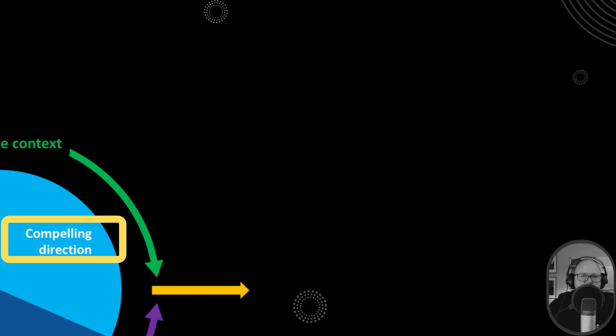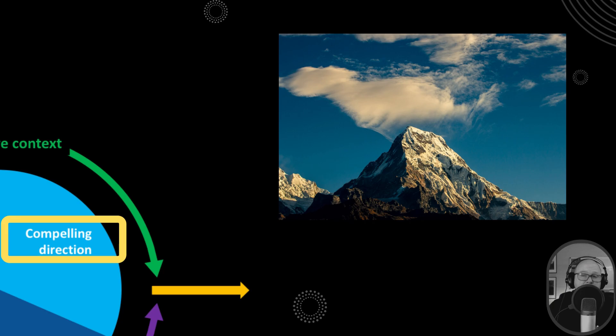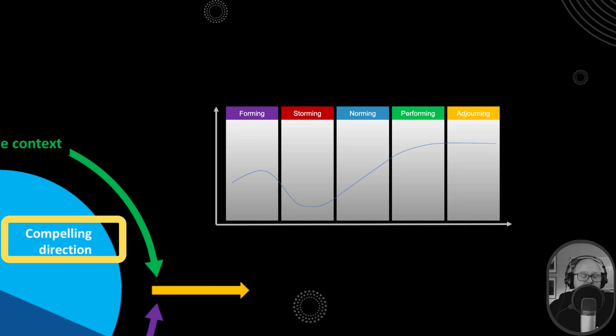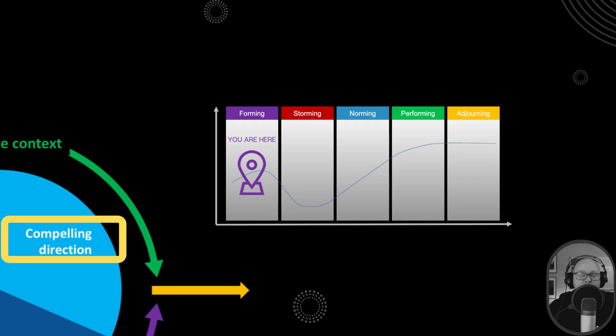Second, teams need a compelling direction. Members need to know and agree on what they're supposed to be doing together. Unless a leader clearly articulates a direction, there's a real risk that different members will pursue different agendas. This is increasingly important in the forming stage of Tuckman's model, where we need to specify exactly what we're supposed to be doing as a team. Very often the fuzziness comes from not having a clear articulation of the vision, mission, and objectives.